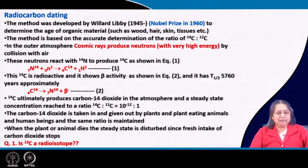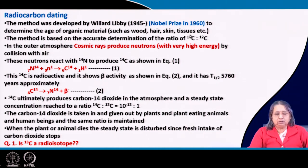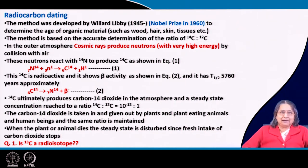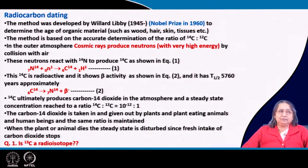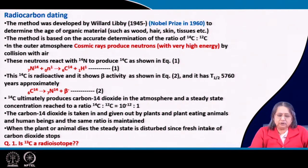What is organic material? It can be wood, hair, skin, or tissue. You can know how old these materials are — for example, some wood produced long ago and kept for 30, 40, or even more years. You can determine when it was produced.